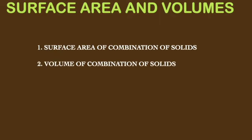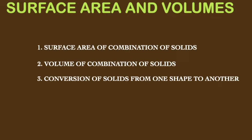Now the second part is volume of combination of solids — how to find the volume of combined solids. The third subunit is conversion of solids from one shape to another shape, and the fourth one is frustum of a cone. This chapter is very important for public examination for scoring purposes, as the problems are lengthier — three-mark and four-mark application-type problems requiring your utmost concentration.